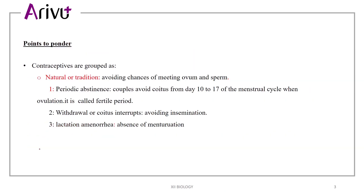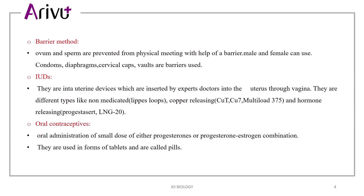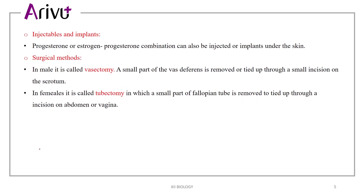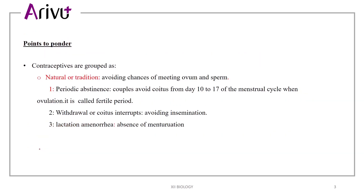Contraceptive methods are mainly grouped as natural or traditional, barrier method, oral contraceptives, injectable and implants, and surgical methods. Natural or traditional methods include periodic abstinence, which means couples avoid coitus during the fertile time, other than 10 to 17 days of the menstrual cycle. Then withdrawal or coitus interruptus, and lactation amenorrhea, that means absence of menstruation during the lactating period.